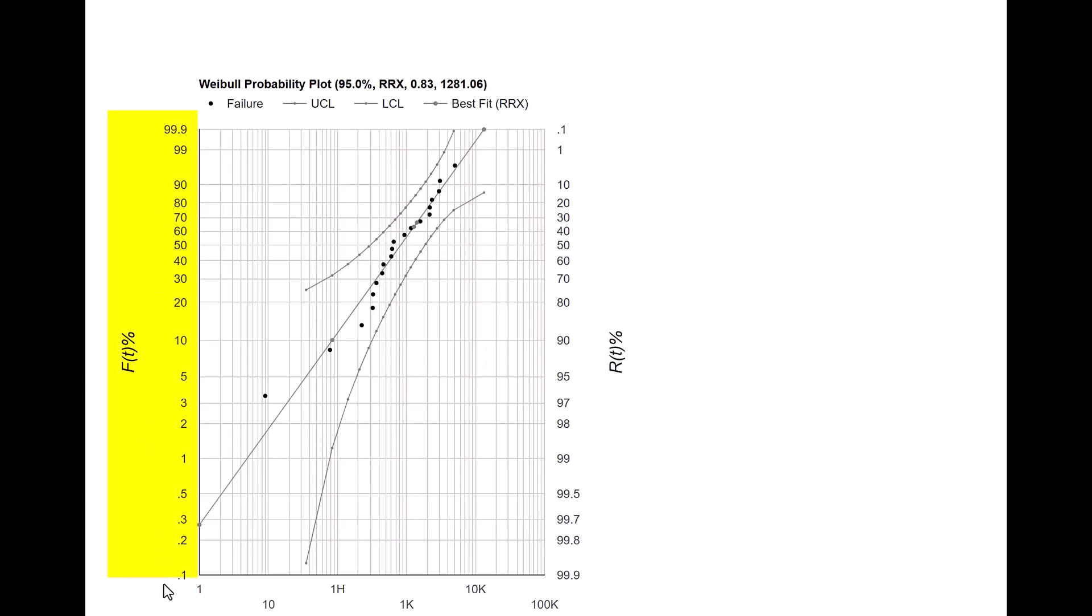The y-axis on the left side of the graph is the cumulative probability of failure capital F(t) in percentage from 0.1 to 99.9, while the y-axis on the right side shows reliability at time t which varies from 99.9 to 0.1.